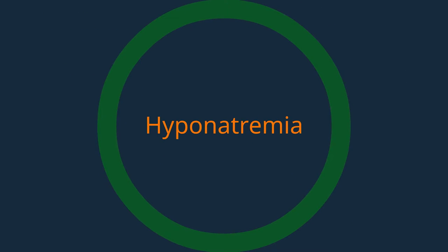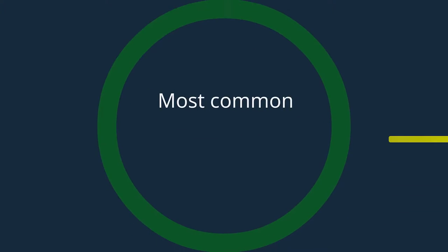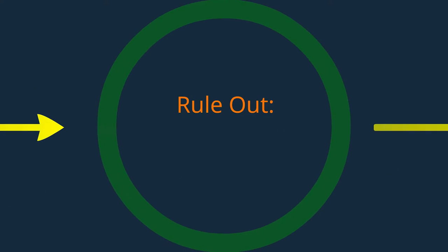Today we'll talk about hyponatremia. Hyponatremia is the most common electrolyte abnormality seen in the hospital. It's very important to know how to manage hyponatremia, as it's seen in many different clinical entities. The first step, however, is to rule out pseudohyponatremia.